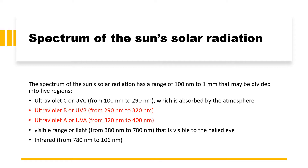we are particularly interested in two ranges. First is UVB, ultraviolet B, that ranges from 290 nanometers to 320 nanometers, and UVA, also known as ultraviolet A, which ranges from 320 nanometers to 400 nanometers.